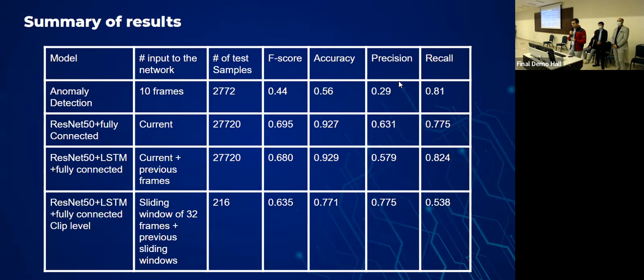As you can see, the best model that performs is the ResNet-50 plus the fully connected layers without an LSTM, as it gives an accuracy of 92.7% and the recall of 77.5%. The ResNet-50 plus LSTM on a frame level also performs really good with a 92.9% accuracy and an 82.4% recall. However, it can be seen that the anomaly detection performed worse than the action recognition, which was proved by our initial hypothesis.